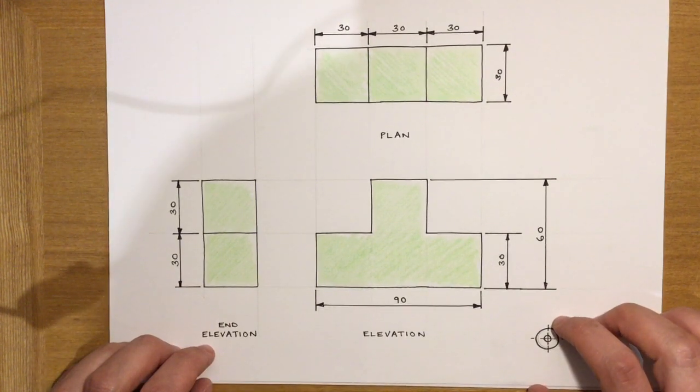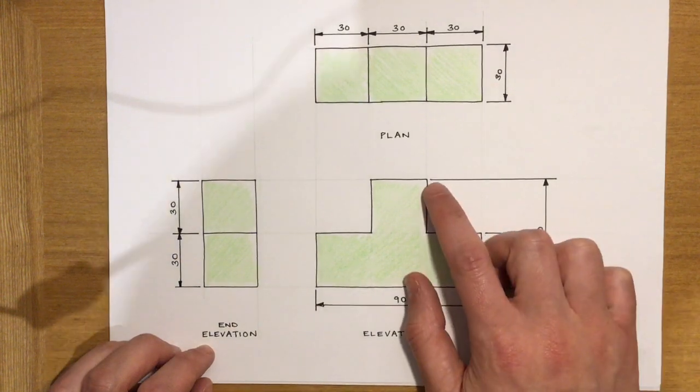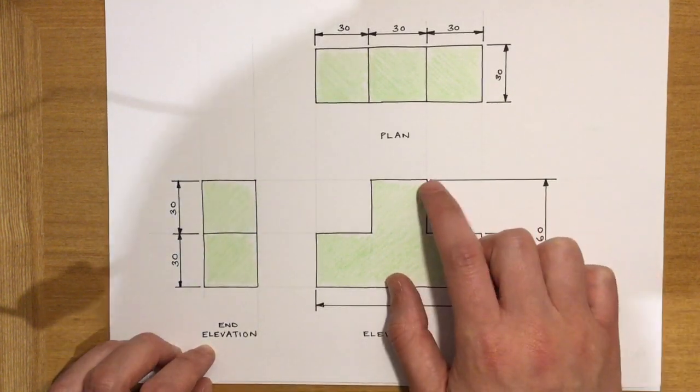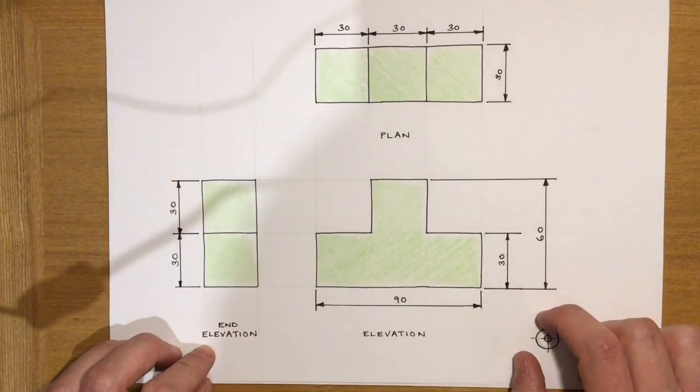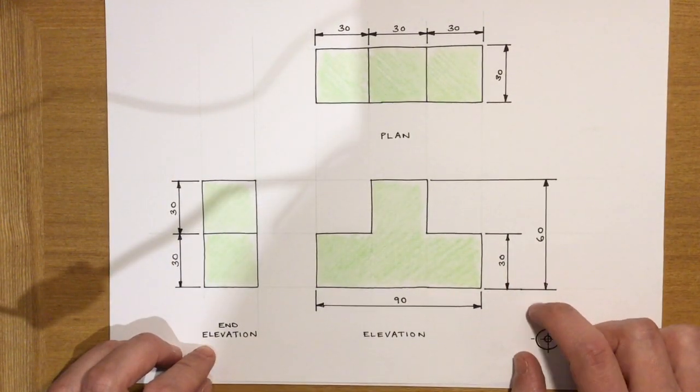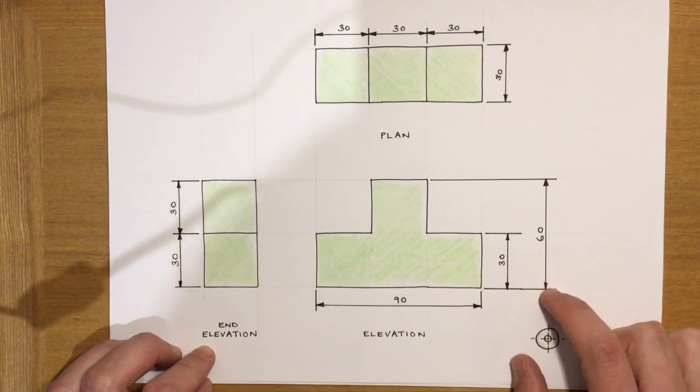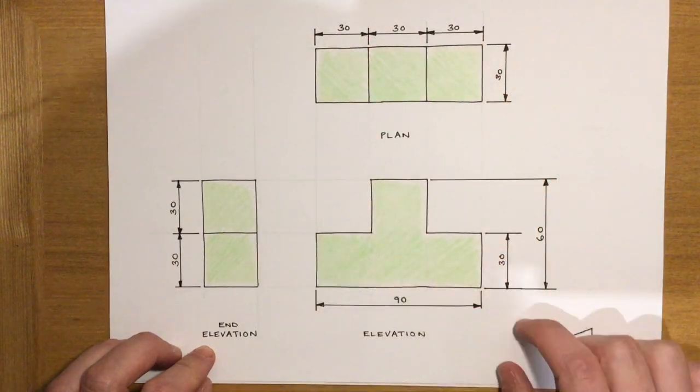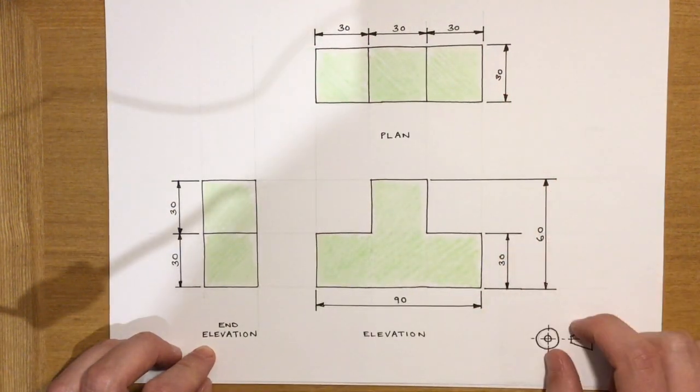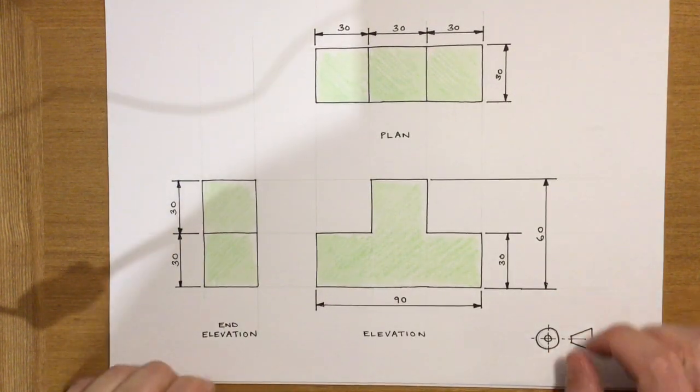So first of all we'll look at the position of the leader lines and the dimension lines themselves. You'll notice that the leader lines, these lines here, they don't touch the object and that's consistent all the way around the page. At no point do any of those leader lines touch. You'll see that all of the dimension lines touch the leader lines and those arrows are all a consistent size all the way around. We've tried to make sure that they're all the same size and each time they're filled in, they're coloured in a solid colour rather than being open.